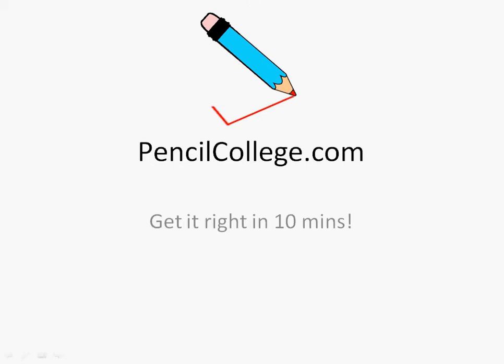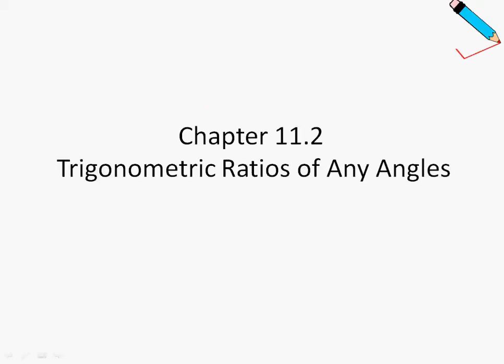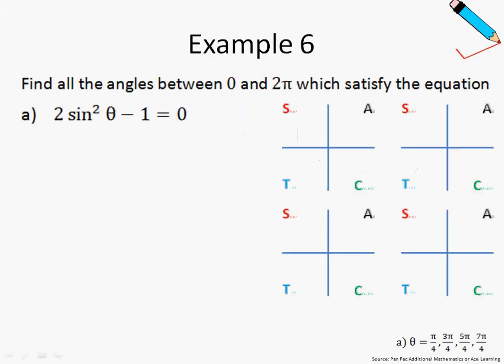Hi guys, welcome to Pencil College. This is our last video for chapter 11.2 where we will be exploring example number 6. So this is a slightly more complicated example in which we will find all the angles between 0 and 2π which satisfy this equation over here.